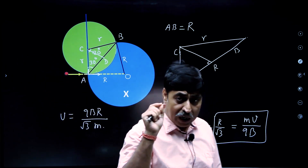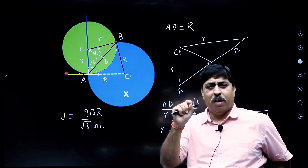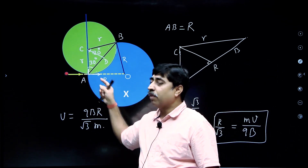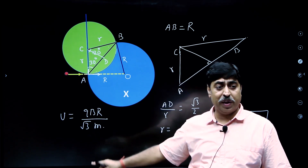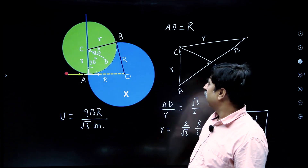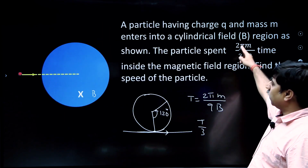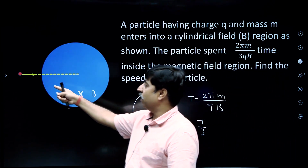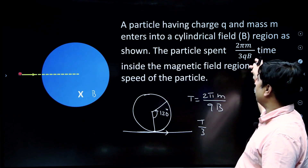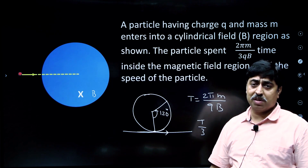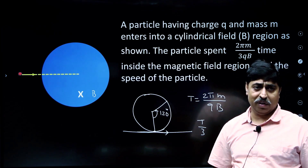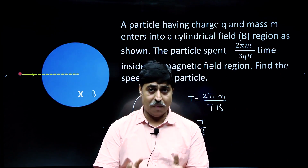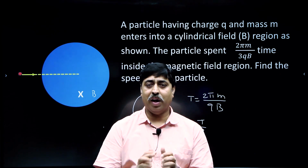I'm leaving you with one observational question to try. What will happen if I increase the speed of the particle? Suppose I throw this same particle with a higher speed — will the particle spend more time inside the magnetic field, the same time, or less time than before? Give it a try. See you in the next video. Keep sharing the videos and do not forget to like the video. Thank you. Goodbye.